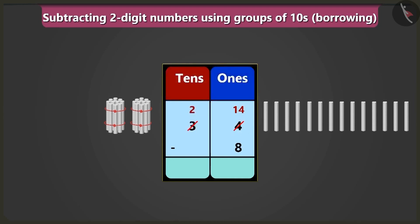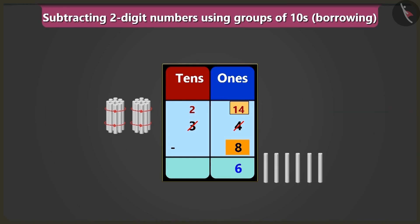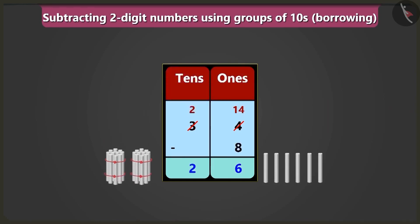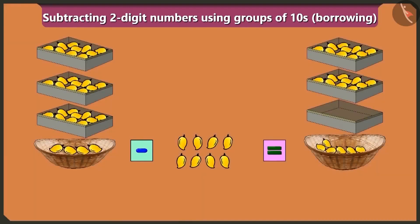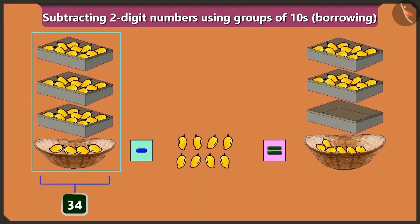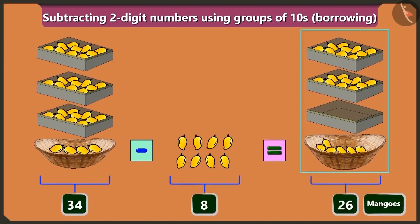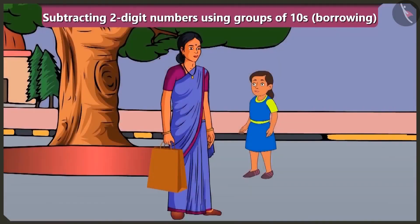Yes, now if we subtract eight from fourteen in the place of ones, then six would remain. So we will write six in the place of ones. Now we will have two tens in the place of tens, so we will have two tens only. So the answer will be twenty-six. In this way, thirty-four minus eight equals twenty-six mangoes. You are absolutely right, Bubbly.